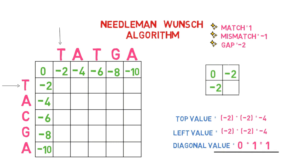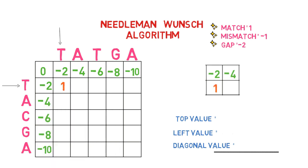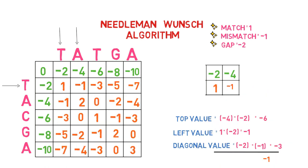Now, from all of these values, we will choose the highest number and place it in box number 1. Similarly, for the next box, we take the value from the top side and add a gap penalty, yielding minus 6. Next, we take the value from the left side and apply a gap penalty once more, yielding minus 1. We took the value from the diagonal box in the last step, and now we must add the match or mismatch value. In this case, T does not correspond to A, so we add the mismatch value of minus 1 to get minus 3. Fill the entire matrix in this manner to complete the second step of the algorithm.